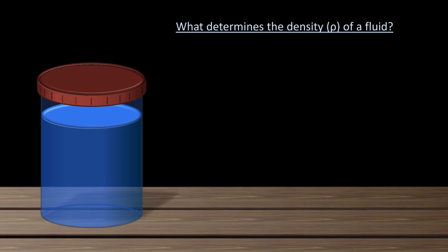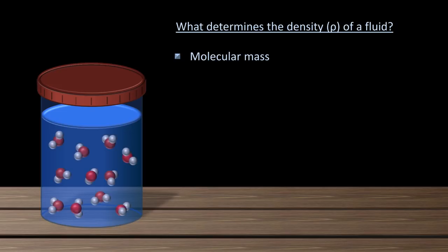The first property that determines density is the mass of the fluid's constituent atoms or molecules. In general, the greater the molecular mass, the more dense the substance is. Remember that despite its appearance to the contrary, water is not some homogeneous uniform substance down to the smallest of scales. Rather, it's composed of individual molecules, each containing one oxygen atom and two hydrogen atoms. These molecules are moving every which way, some faster, some slower.